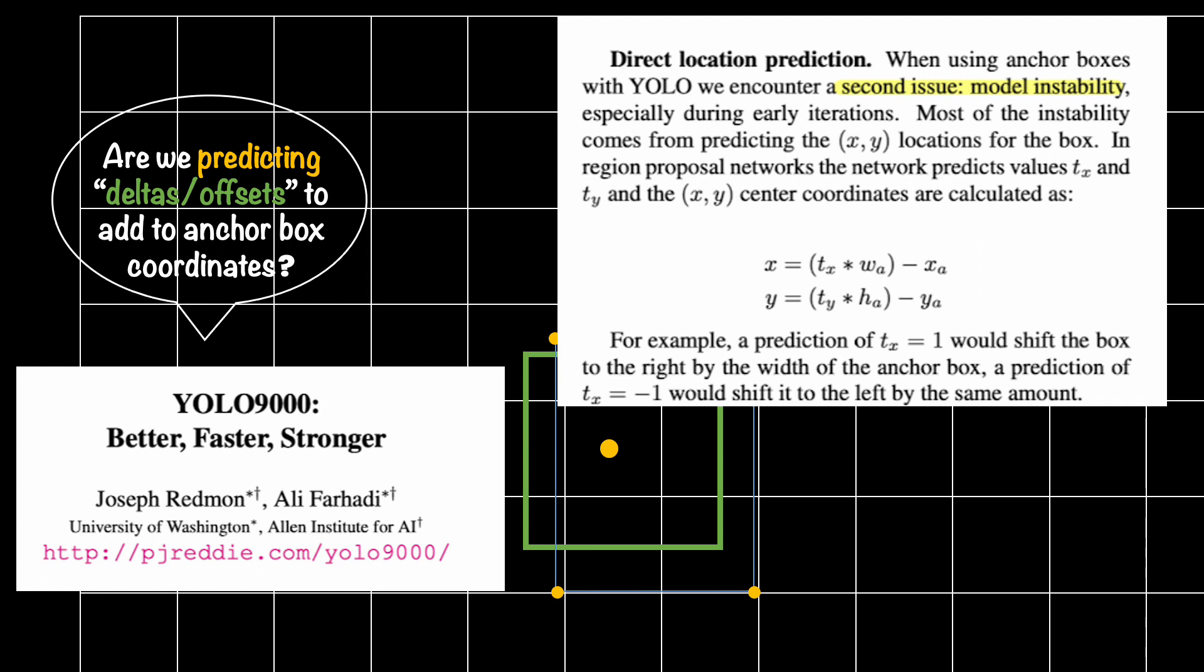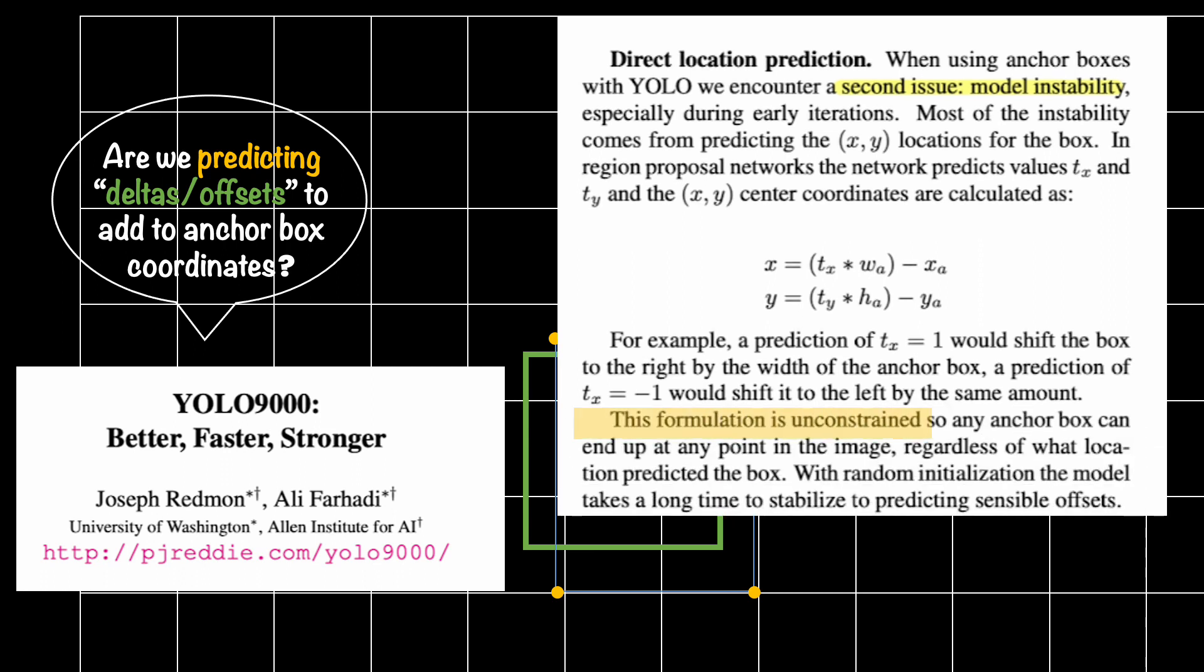In this paper, they argued that directly predicting the offsets for anchor boxes leads to model instability, especially in early training iterations. Please note that this does not mean that the formulation is invalid. It's just that either it will take long time for the network to converge or you need to employ some extra training tricks and strategies for it to converge.